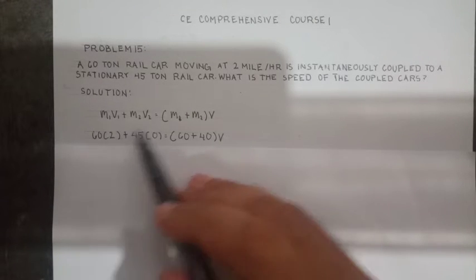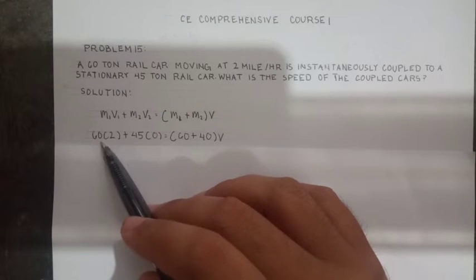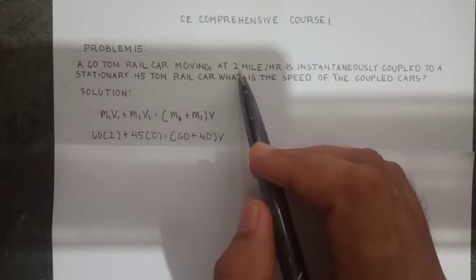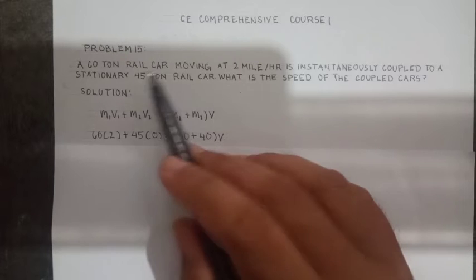Let's insert the values. 60 is the momentum times 2, the moving speed of the cars, plus 45.